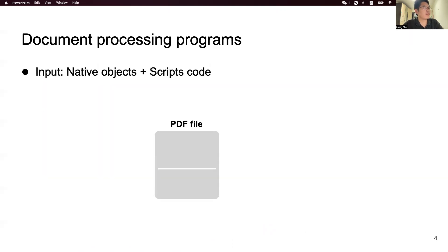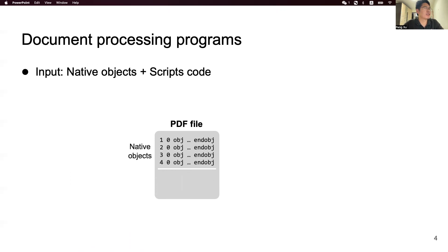First of all, I'm going to introduce the structure of a document with embedded script code. This kind of document usually consists of two parts: native objects and script code. Native objects make up the main content of the document, such as pictures, annotations, paragraphs, images, and tables.